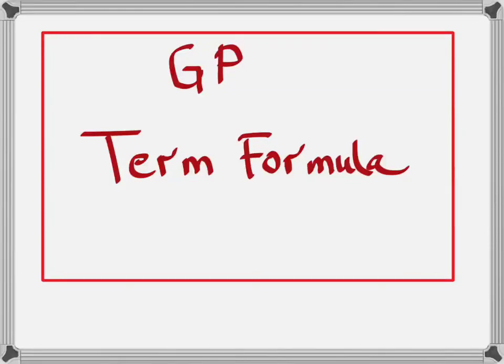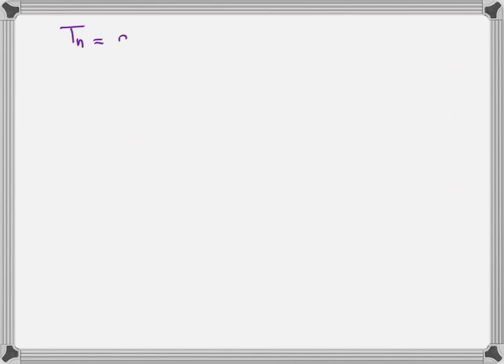Geometric progression. This is the second video in the series on geometric progression, and now we are focusing on the term formula. Tn stands for a particular term. In a geometric series, the term formula is A times r raised to the power of n minus 1.